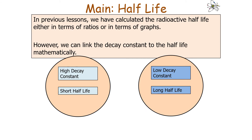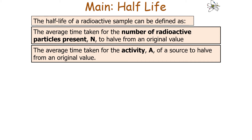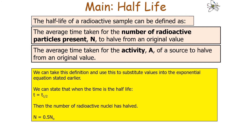In the previous lesson we calculated radioactive half-life using ratios or graphs. We can also link the decay constant to the half-life mathematically: a high decay constant leads to a short half-life, and a low decay constant leads to a long half-life. The half-life is defined as the average time taken for the number of radioactive particles, or the activity of a source, to fall to half its original value.